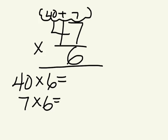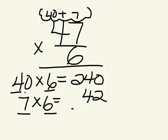When we solve those partial products, we get 4 times 6 is 24 plus 1, 0, and 7 times 6 is 42. When we add them together, we will get 282.